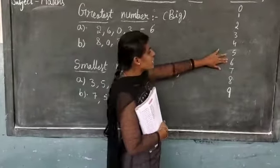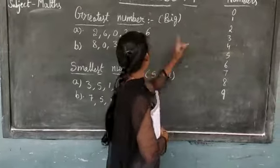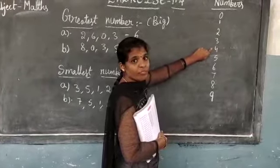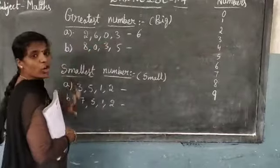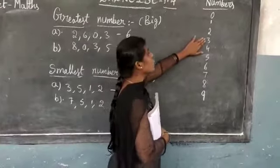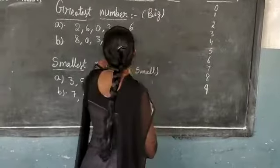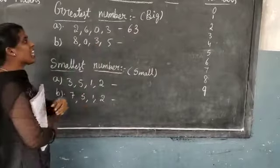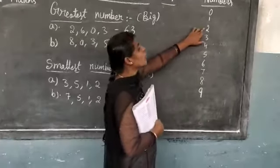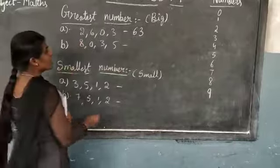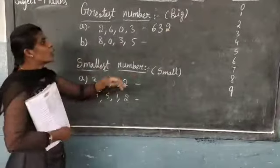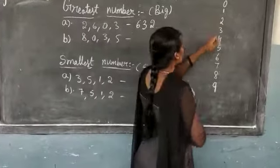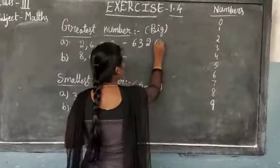Next, which is the small number after 6? 5 — is 5 there? No. Then next, 4 — 5 before 4. Is 4 there? No children. Then go to 3 — 4 before 3. Is 3 there? Yes, children. 3 is there. Next, 3 before 2 — is 2 there? Yes, children. Next, 2 after 1 — is 1 there? No, don't write. Next, 1 after 0 — is 0 there? Then you write the 0.